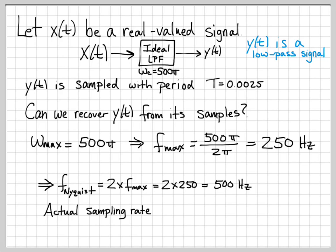What did we actually sample at? We actually sampled at a sampling period of 0.0025. So we can go ahead and compute the sampling rate as 1 over that period. So f sub s equals 1 over T, which is 1 over 0.0025, which is 400 hertz.